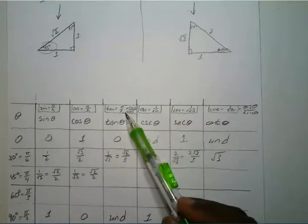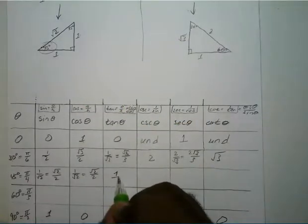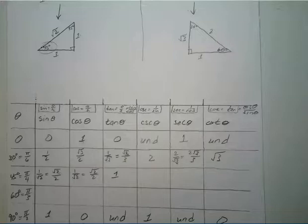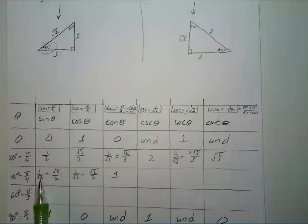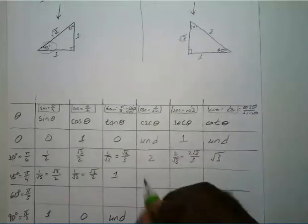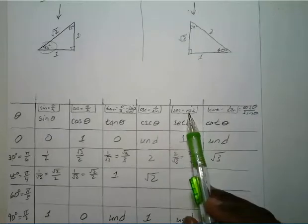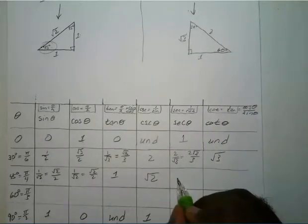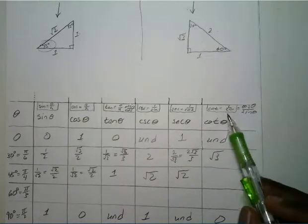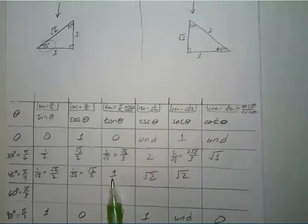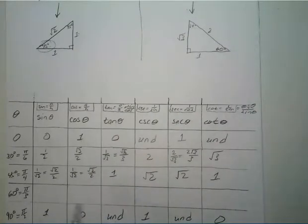Tangent is opposite over adjacent: one over one, which is just one. Cosecant is the reciprocal of sine — square root of two over one, which is square root of two. Secant is the reciprocal of cosine — also square root of two. Cotangent is the reciprocal of tangent — flipping one is still one. So we've pretty much filled in everything for 45 degrees.